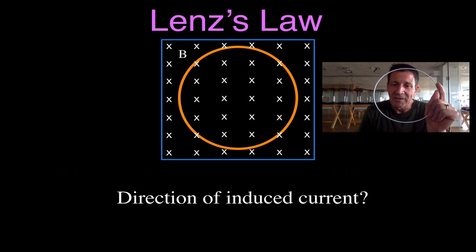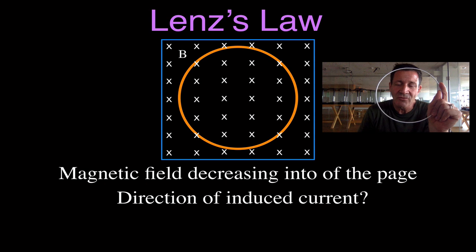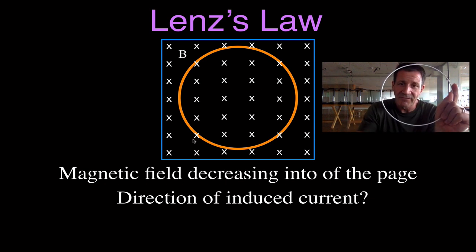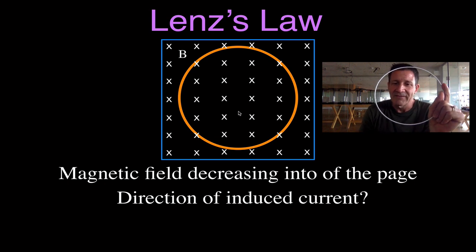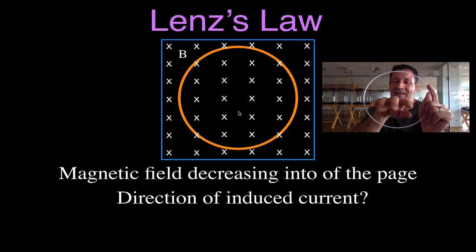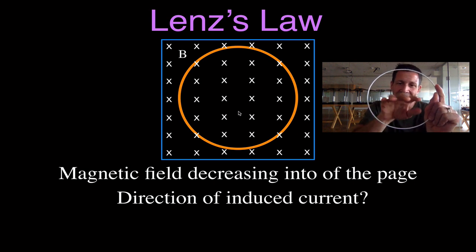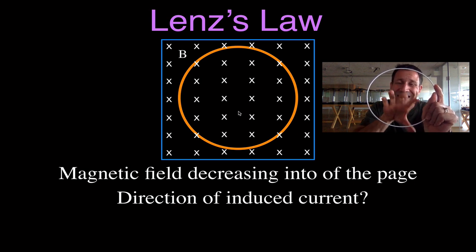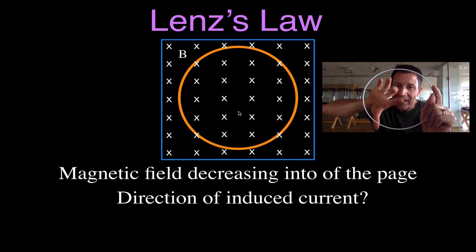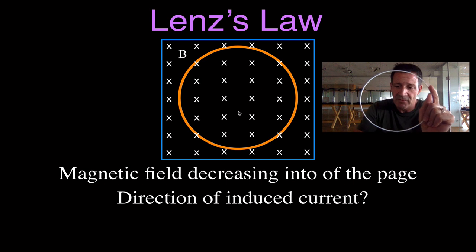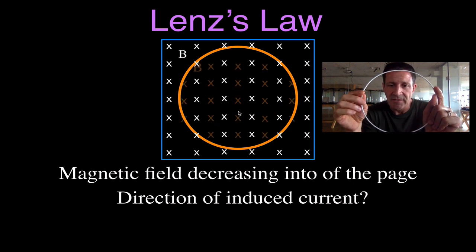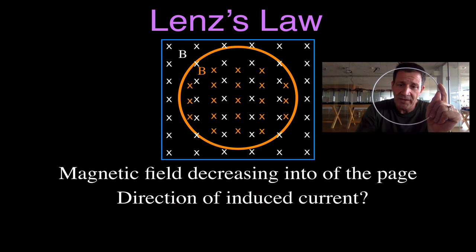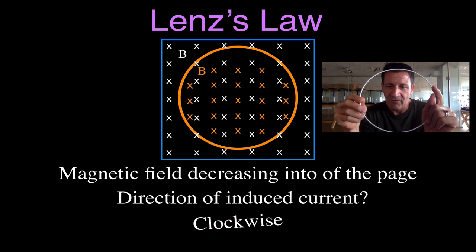The last case: the magnetic field is decreasing into the page. The magnetic field in the coil is going into the page but it's getting less — it's falling away. Now the coil wants to produce more magnetic field that points into the page. In order to do that, the induced current has to flow in the clockwise direction. So it's going to produce more into the page, and therefore the induced current is in the clockwise direction.